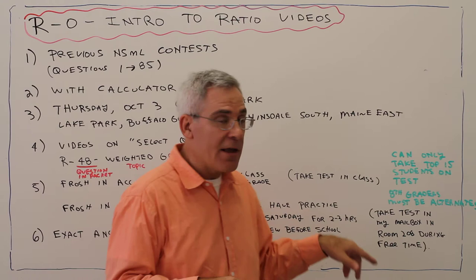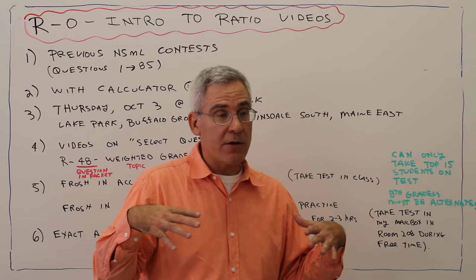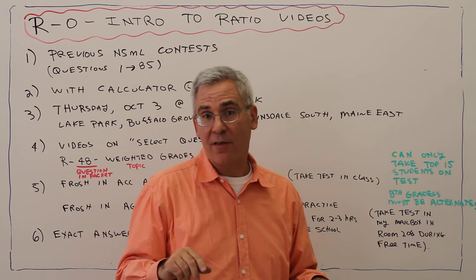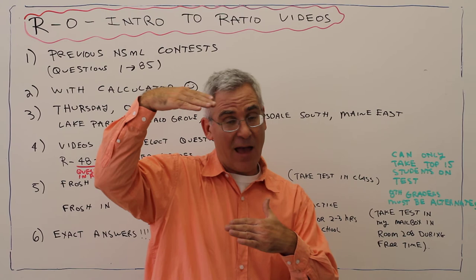Keep in mind, I can only take about 15 students to the away meets. For the home meet, which is going to be the second math meet, I can take everybody. But for this first one, I'm going to take the top 15 students — so if 20 students want to go, I'll just take the top 15 scores.